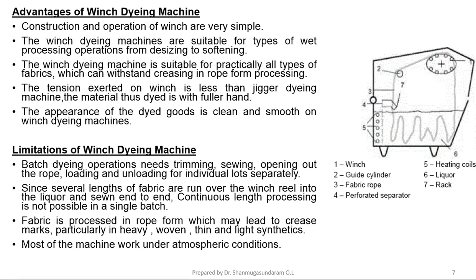Limitations of Winch Dyeing Machine: Batch dyeing operation needs trimming, sheaving, opening out the rope, and loading and unloading for each individual lot separately. Since several lengths of fabric are run over the winch reel into the liquor and sewn end to end, continuous length processing is not possible in a single batch. Fabric processed in rope form may lead to crease marks, particularly in heavy, woven, thin and light synthetic fabrics. Most of the machines work under atmospheric conditions.